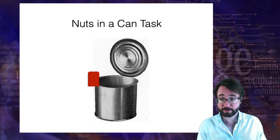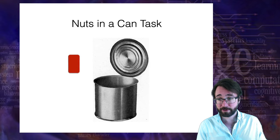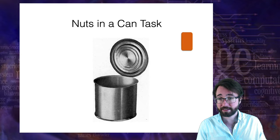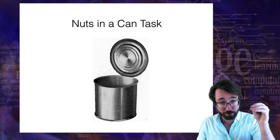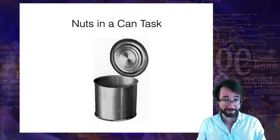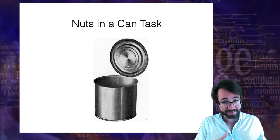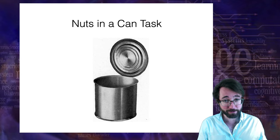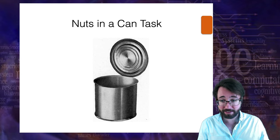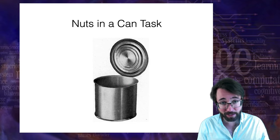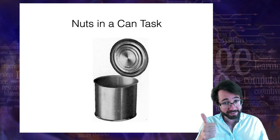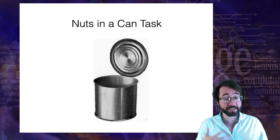I throw in one, two, three, four, five, six, seven nuts, and then ask the Piraha person to put in the same number of nuts that I put in. So I put in six, and then the Piraha person puts in one, two, three, four, five, six. If they put in the same number of nuts as I put in, then you say they succeeded on the task; otherwise you say they did not get it right.